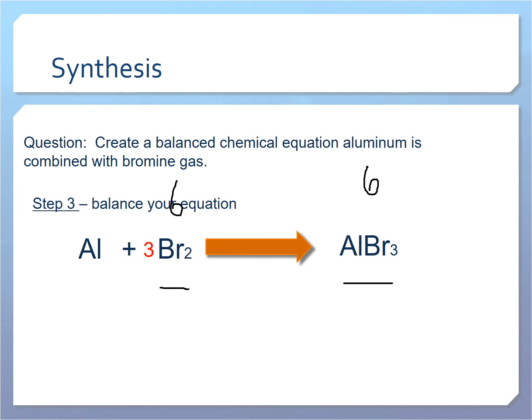So we'll start by putting a three in front over here. Three times two gives us six, and two times three gives us six over here. But now, of course, that gives us two aluminums. I'll put two in front of that.